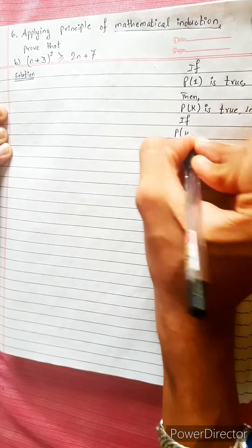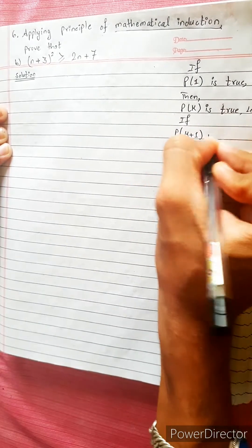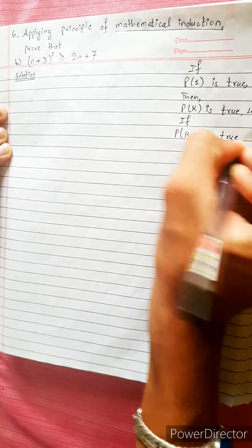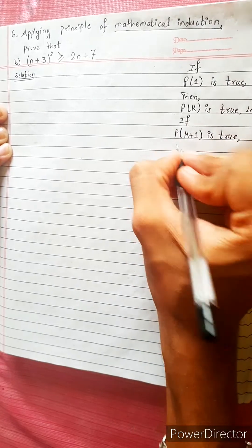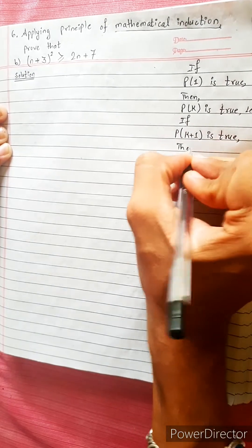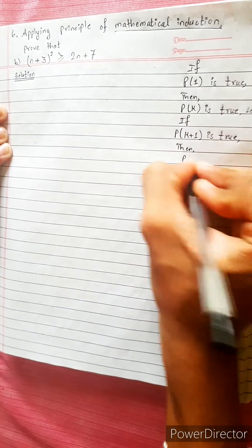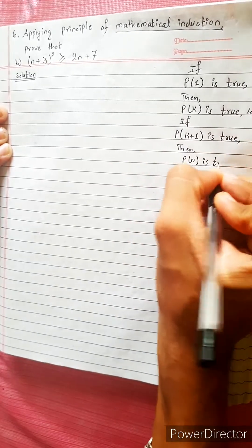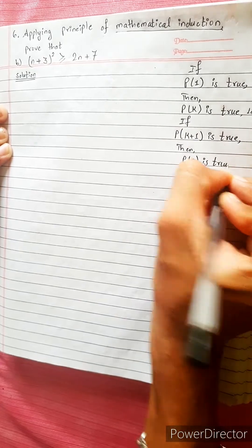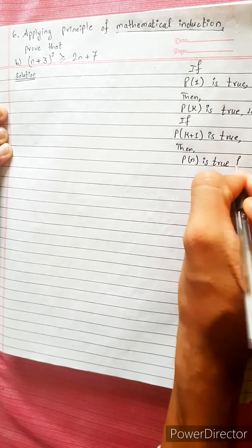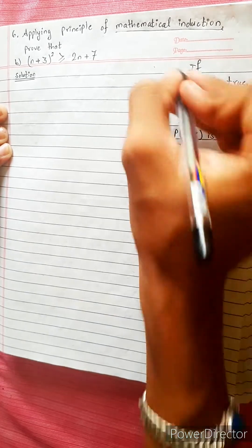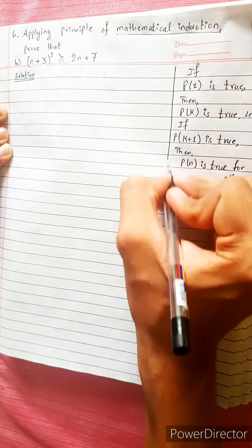If Pk plus 1 is true, then Pn is true for all natural numbers. The other condition is also true.